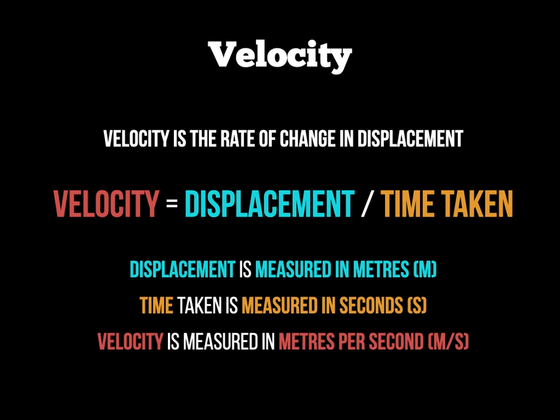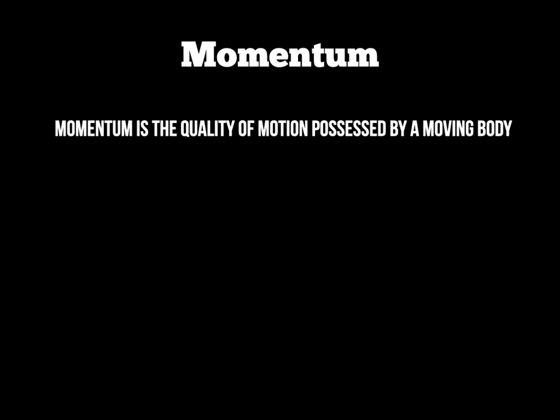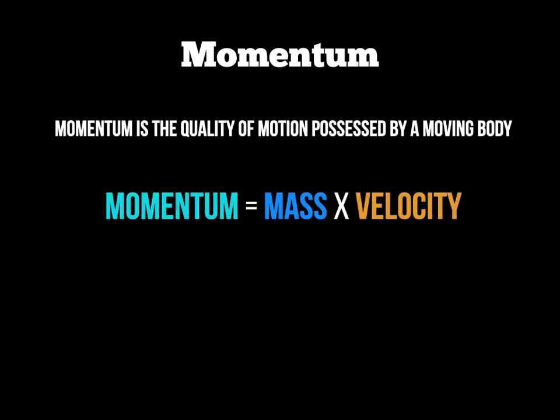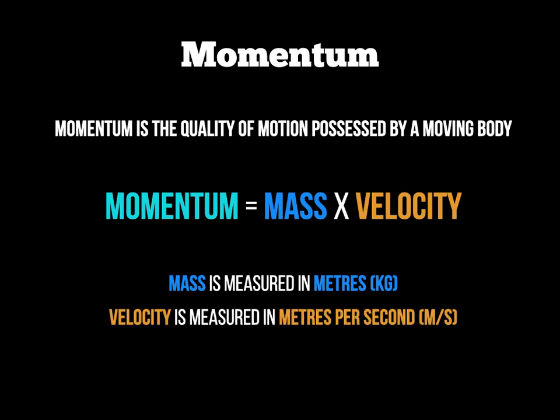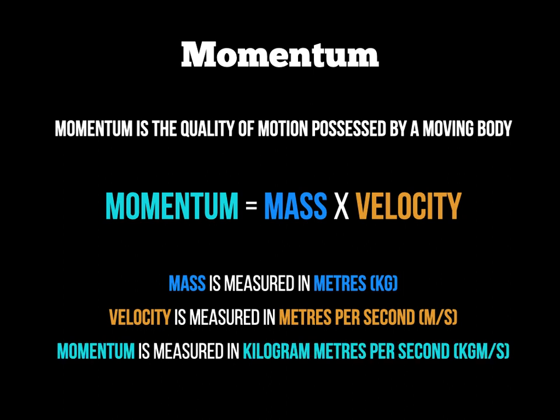The second calculation is momentum. Momentum refers to the quality of movement or motion possessed by a moving body — the athlete or object. The equation is: momentum = mass × velocity. Mass is measured in kilograms, velocity in metres per second, so momentum is therefore measured in kilogram metres per second, written as kgm/s.